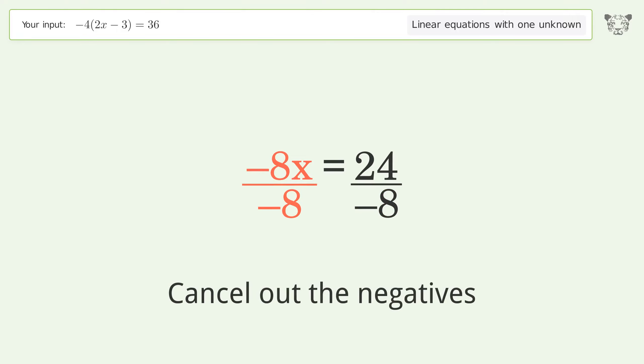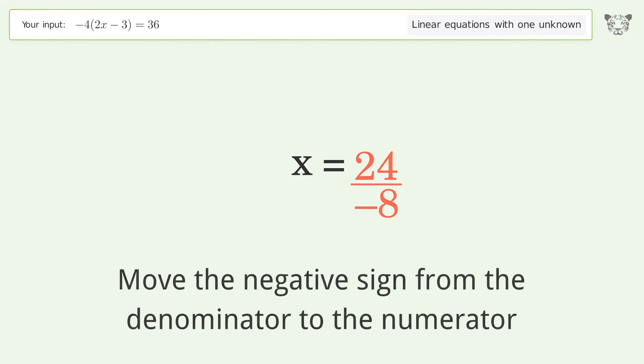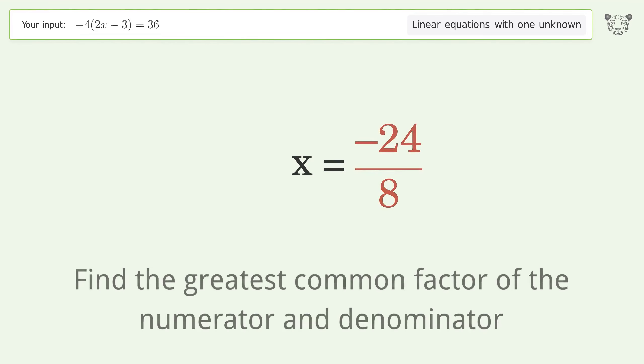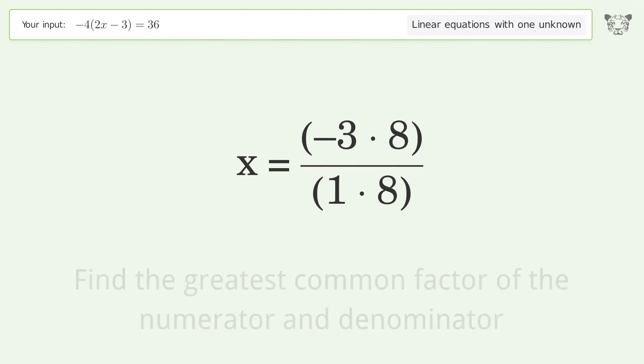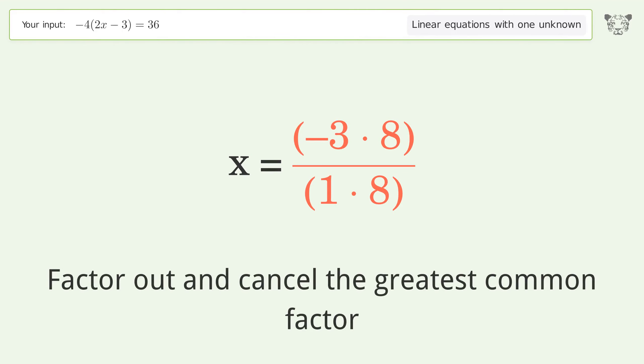Cancel out the negatives. Simplify the fraction. Move the negative sign from the denominator to the numerator. Find the greatest common factor of the numerator and denominator. Factor out and cancel the greatest common factor.